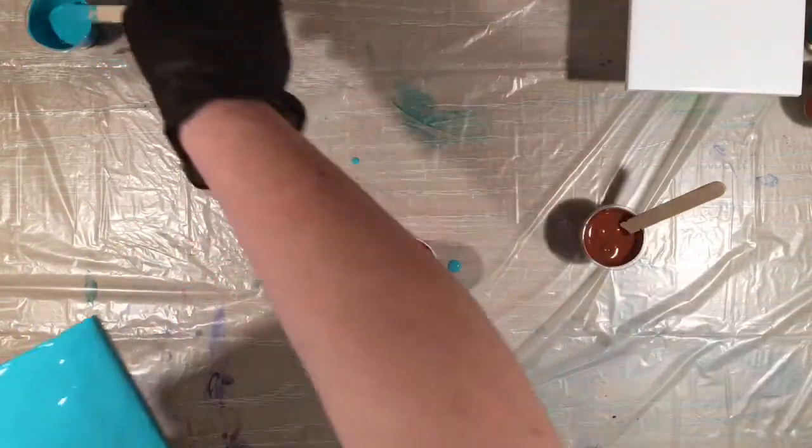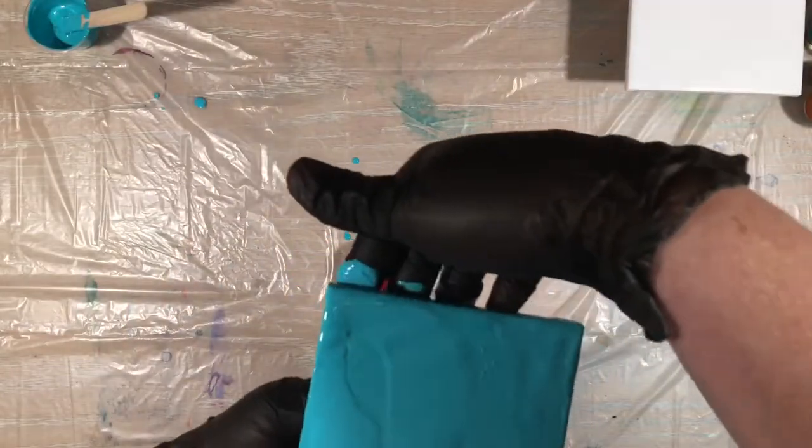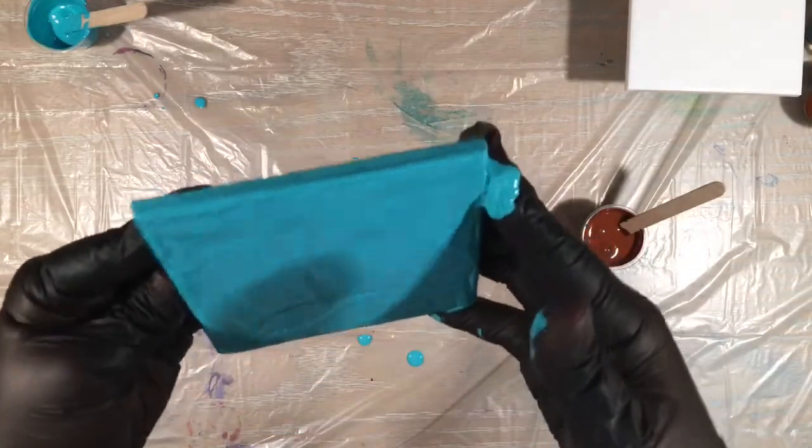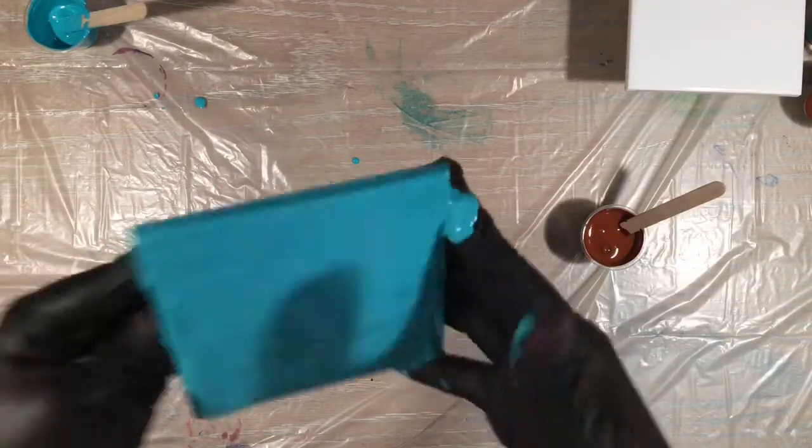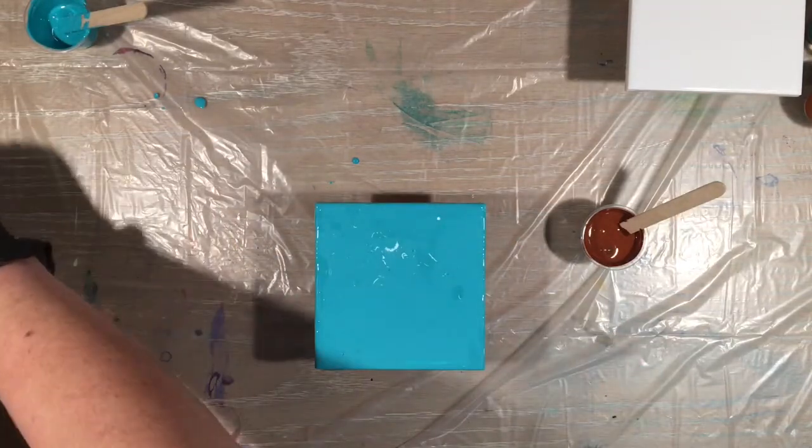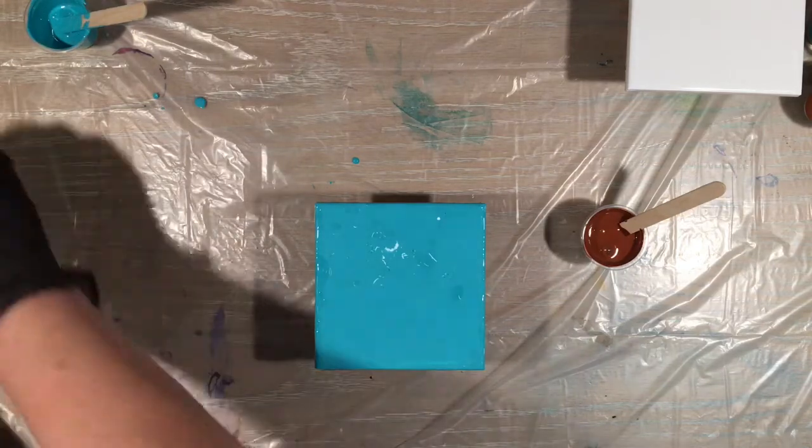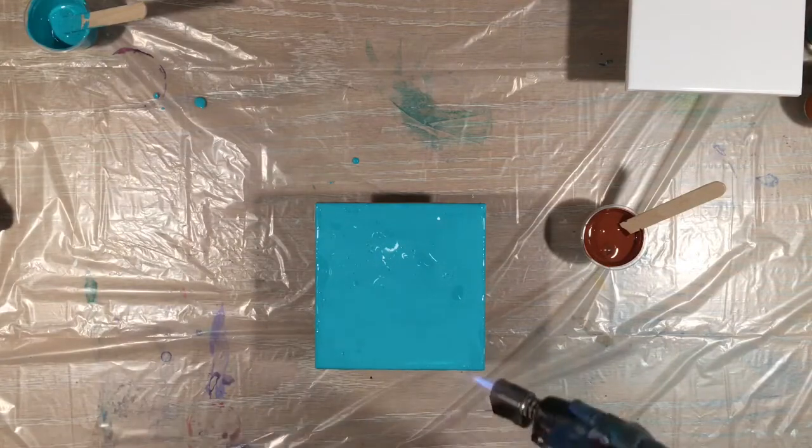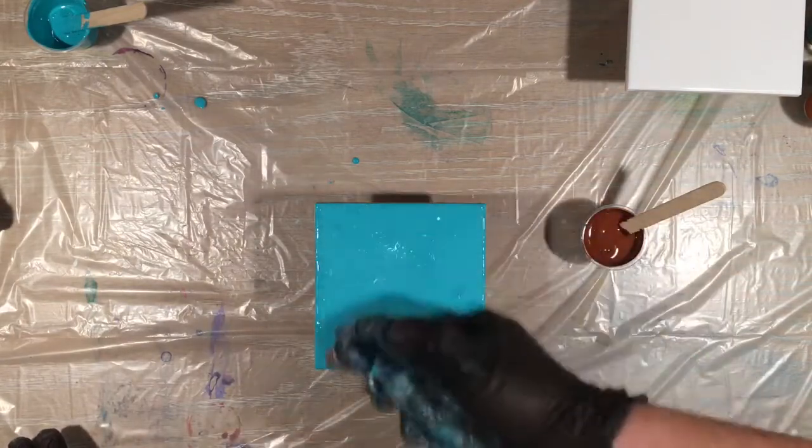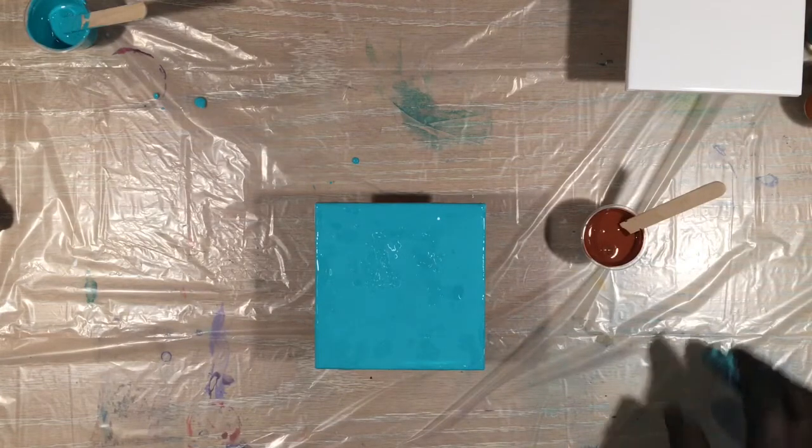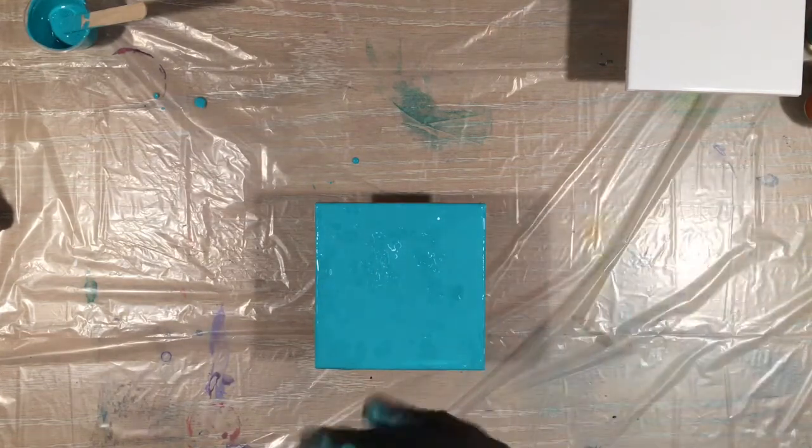So there is that. Now the one thing that I did not do the last time, and I want to do this time, is I want to torch the base color. Because I noticed that a little bit of a pinhole effect happened when it dried on the last one. And I noticed it was the blue that pinholed. So I am going to torch this and make sure there are no air bubbles. All right, now here goes nothing, guys.